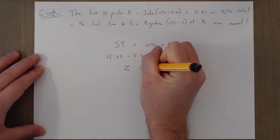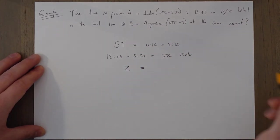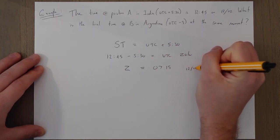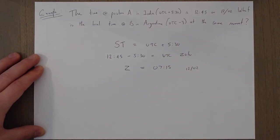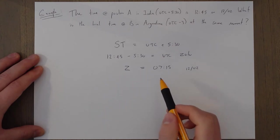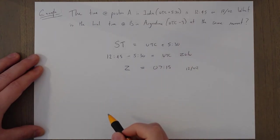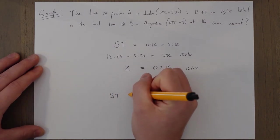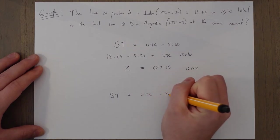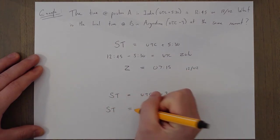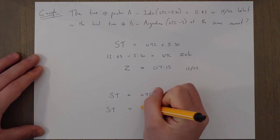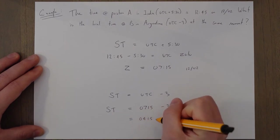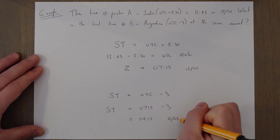And then we would take away 5 hours 30 to find out the UTC time or the Zulu time. And the Zulu time in this case equals 7:15, still on the 12th of February. And then we would apply the time zone of Argentina onto this. So we have our standard time in Argentina equals the UTC minus 3. Standard time in Argentina is 07:15 minus 3, it's going to be 4:15 a.m., still on the 12th of February.